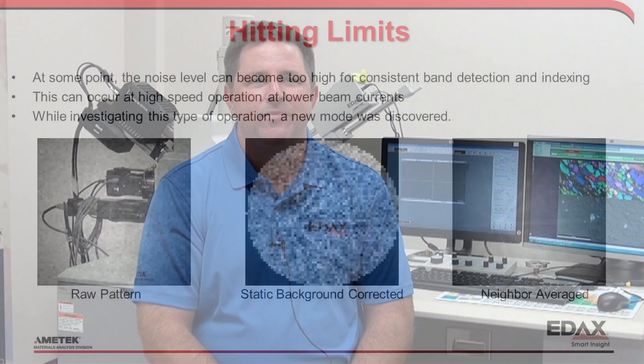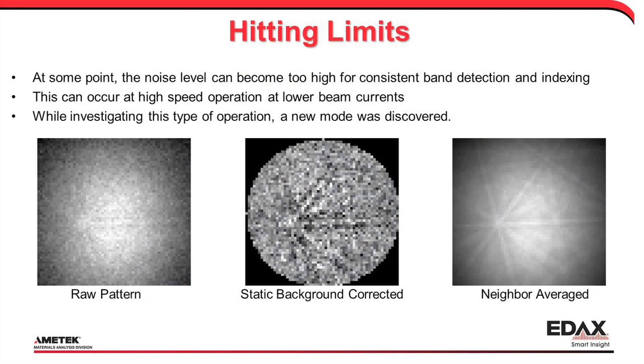EBSD indexing performance is influenced by the performance of the band detection algorithms. Generally, there is a trade-off between the imaging noise in an EBSD pattern and the acquisition speed of the patterns. In order to collect EBSD data faster, noisier patterns are acquired and analyzed. This approach works fine up to a point. Eventually, the signal-to-noise level in a pattern drops to the point where the band positions cannot be consistently and accurately detected.